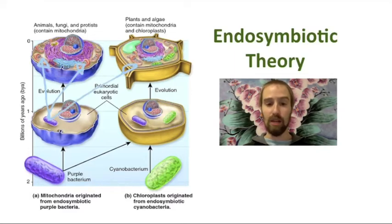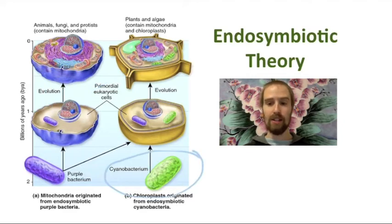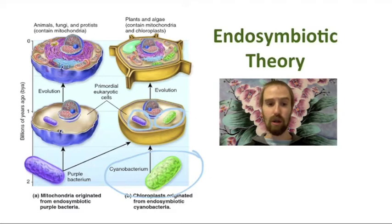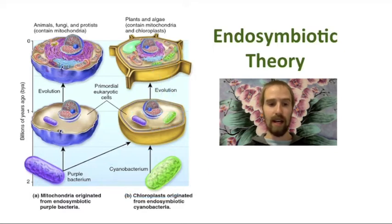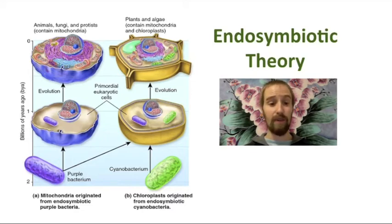Some time later, a similar thing happened with photosynthetic cyanobacteria. These symbiotic cyanobacteria, enveloped by larger cells that already contained symbiotic mitochondria, evolved into the chloroplasts that we know today, and the plants and algae that originated from this symbiosis all contain chloroplasts like these. It might sound a little far-fetched at first — a prokaryotic cell living and functioning inside of a eukaryotic cell — but living organisms do crazy stuff like this all the time.